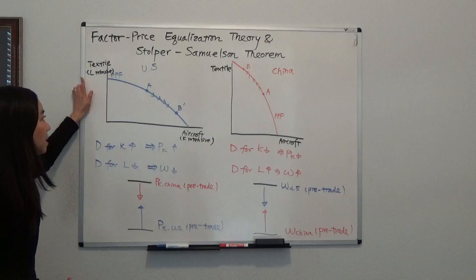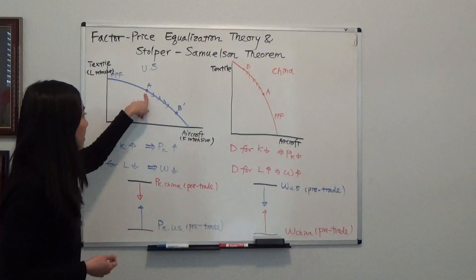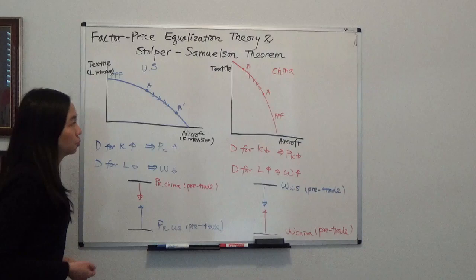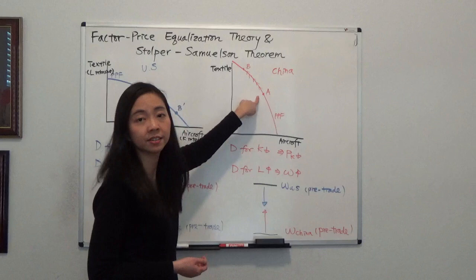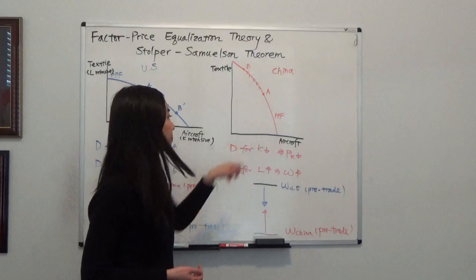So before trade, the U.S. is producing and consuming at point A — A stands for autarky — on the U.S. production possibility frontier. Whereas China, they produce and consume at point A — A stands for autarky — on China's production possibility frontier.